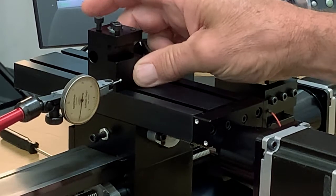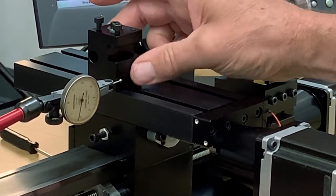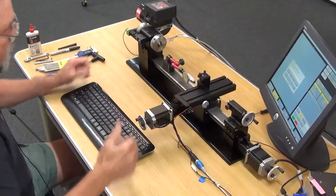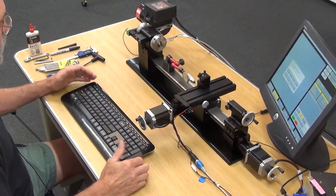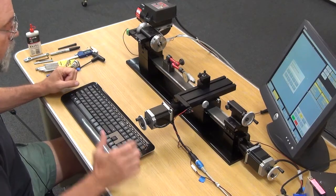Okay I can push and pull on this and you can see the indicator moving a couple tenths but it bounces right back. So holding a tolerance of a half thou or a few tenths here is definitely not going to be a problem.